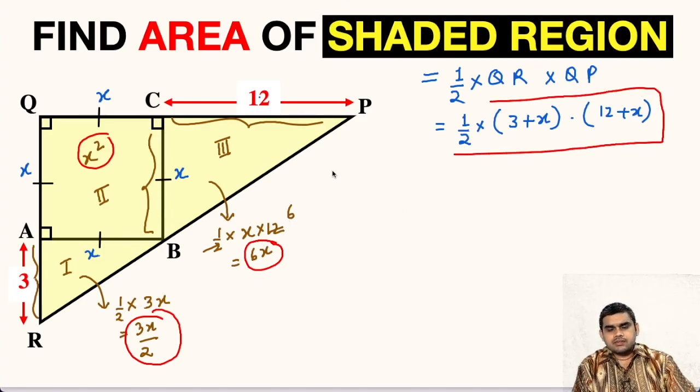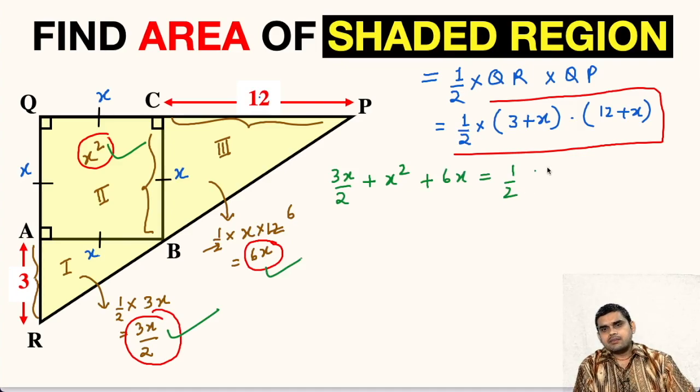The first area was 3X upon 2, this one. Second one was X square, so plus X square. The third one was 6X, so plus 6X equals half times 3 plus X multiplied with 12 plus X.